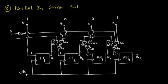We've got another line referred to as S, which determines whether we want to send the data as an input or obtain the output from this kind of register. Other than that, we have the clock line, and all the flip-flops here are D flip-flops.